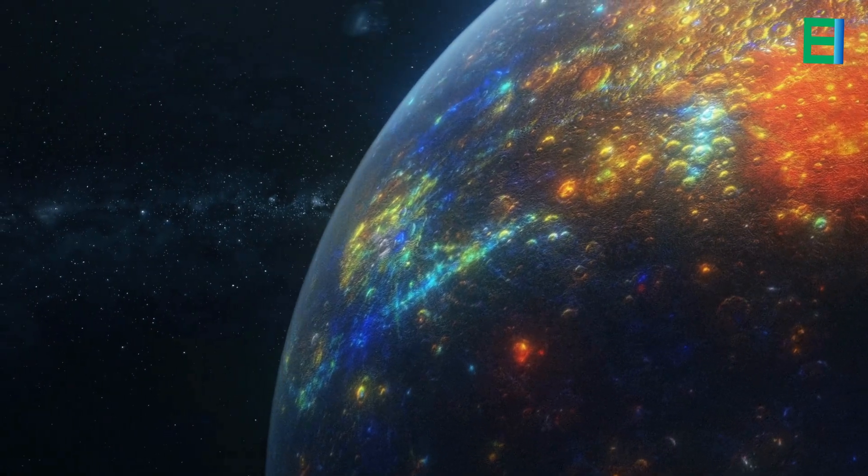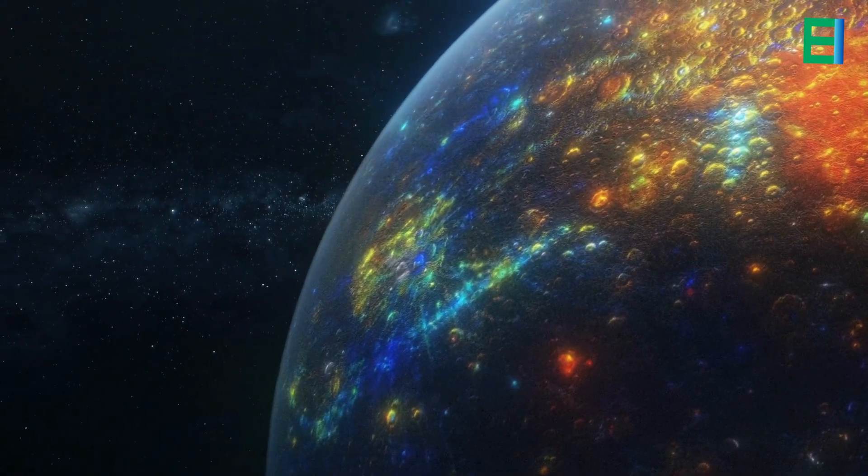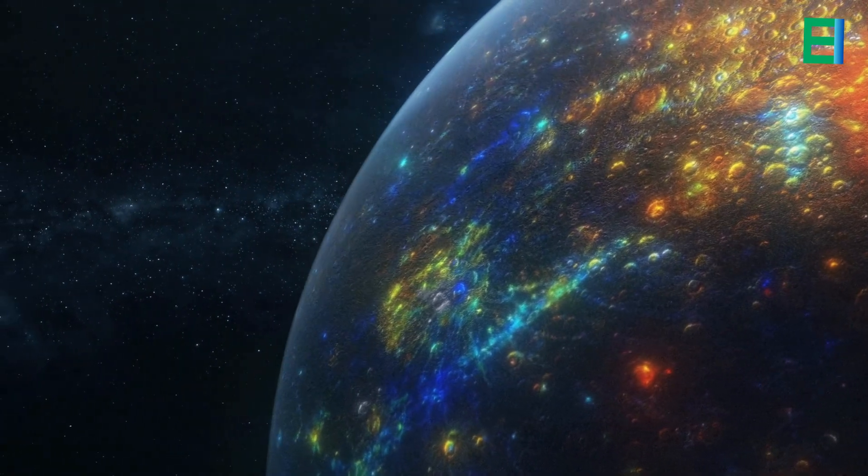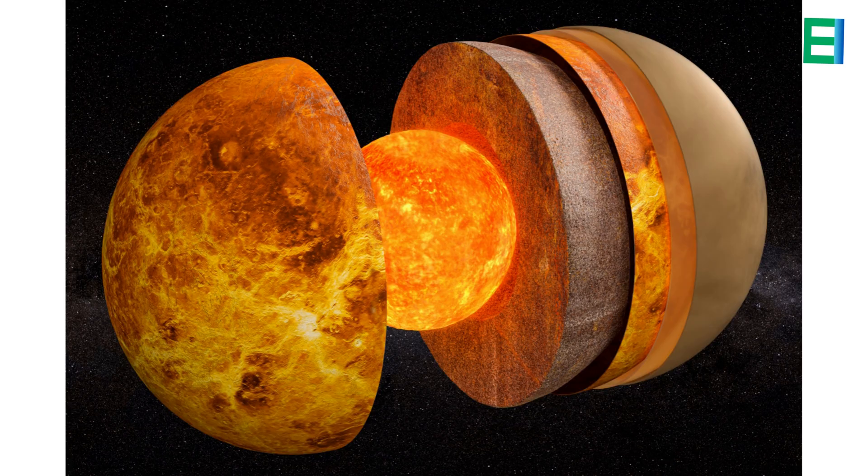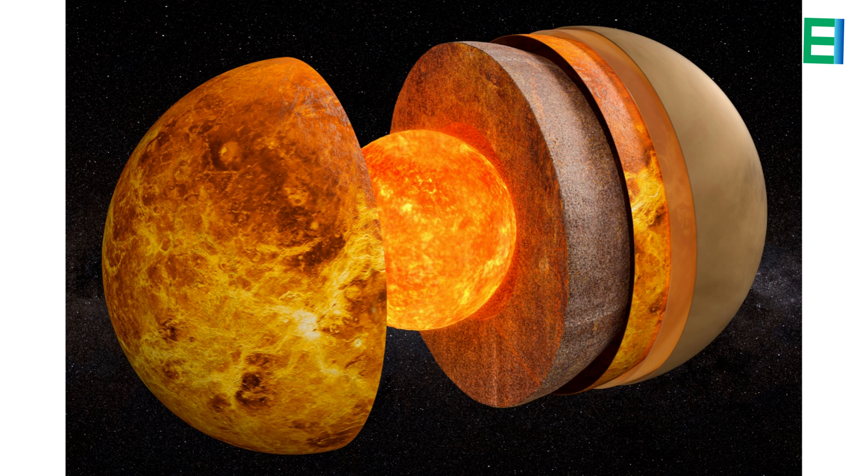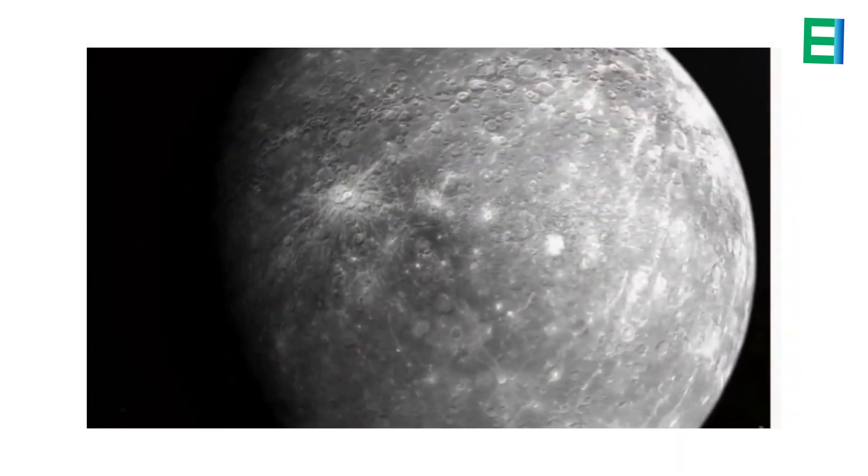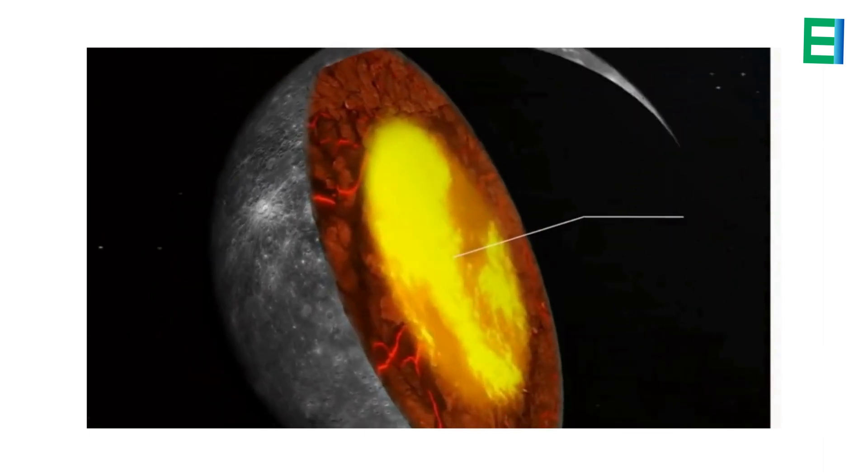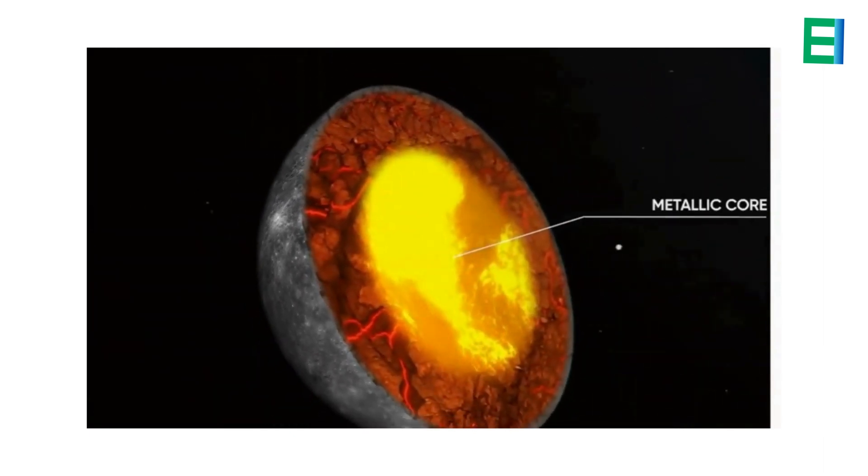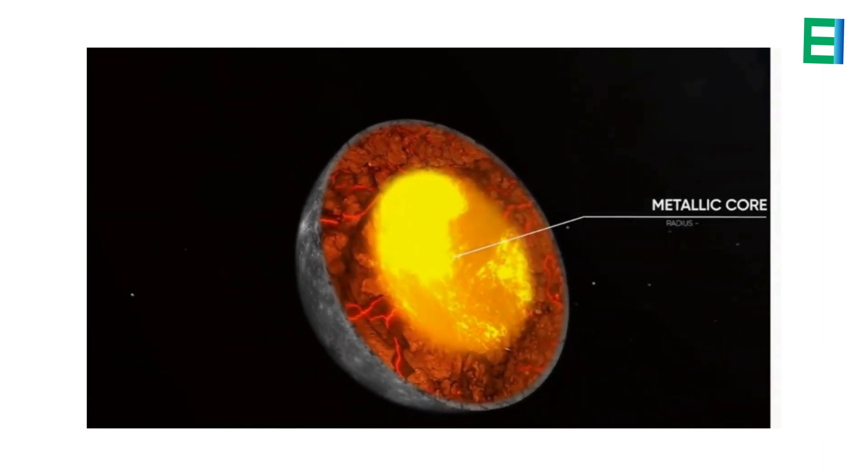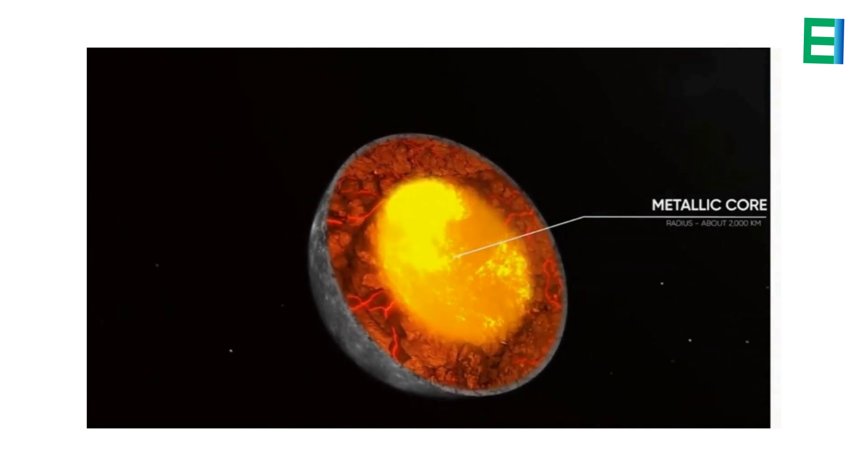The structure of Mercury can be described as a layered composition comprising various components. At the heart lies a large solid iron-rich core measuring approximately 2,074 kilometers in radius, accounting for 85 percent of the planet's total radius.